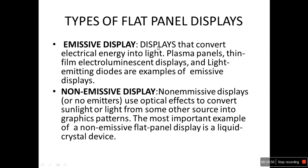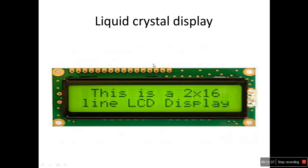Types of flat panel displays: emissive displays convert electrical energy into light — examples include plasma panels, thin film electroluminescent displays, and light emitting diodes (LEDs). Non-emissive displays use optical effects to convert sunlight or light from another source into graphic patterns — the most important example is liquid crystal display, or LCD.